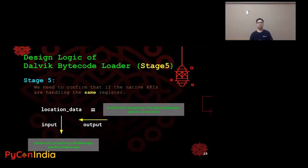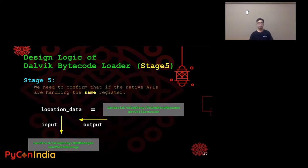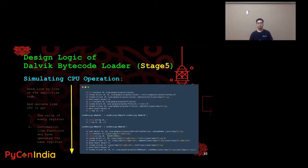Now let's see the implementation of stage five — the most important part. In stage five, we need to confirm that the native APIs are handling the same register. Using the same example of sending out location data by SMS: when native API getCellLocation is called, it returns the location data of the cell phone. What we do in stage five is check if the other native API, sendTextMessage, sends out that location data. So in stage five, we simulate CPU operation. We read line-by-line through the small-line source code and operate like a CPU to get two things: the value of every register, and information about which functions have operated on the same register.